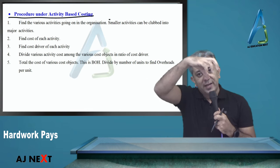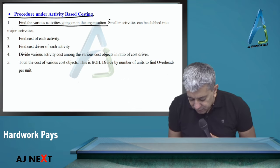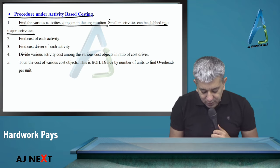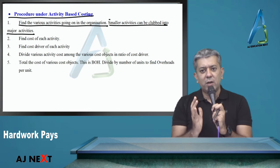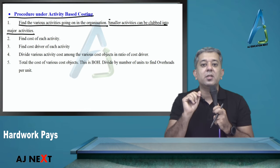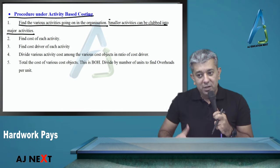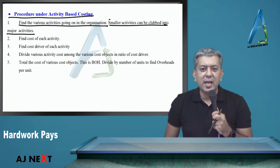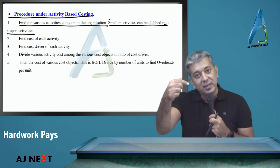So we say let's shift to activity-based costing. Activity-based costing's rule is very simple. Identify the major activities happening in the company. Find out the various activities going on in the organization. Small activities can be clubbed into larger activities. You don't need to identify every small activity, basically try to have big activities.